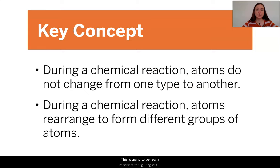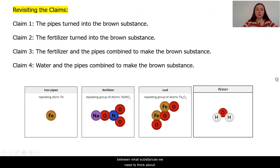So this is going to be really important for figuring out what could have caused the rust to form at Westfield. It seems like a chemical reaction most likely took place, but between what substances we need to think about.